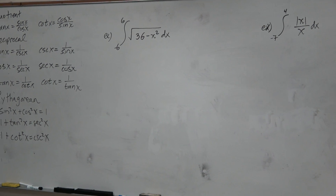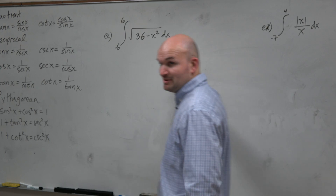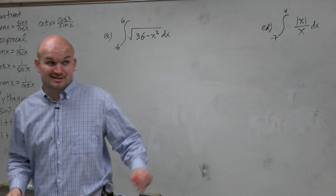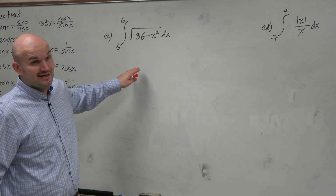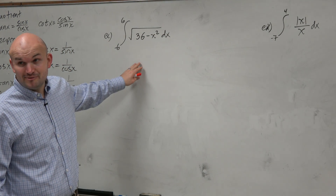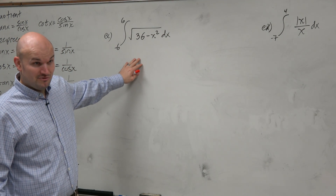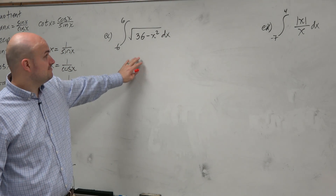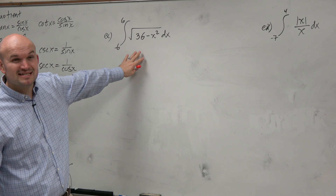36 minus x squared, or the square root of 36 minus x squared. I'm going to tell you guys, this shows up a lot. You're going to see this on a quiz — hint, hint — or some other work. So we need to kind of make sense of this.